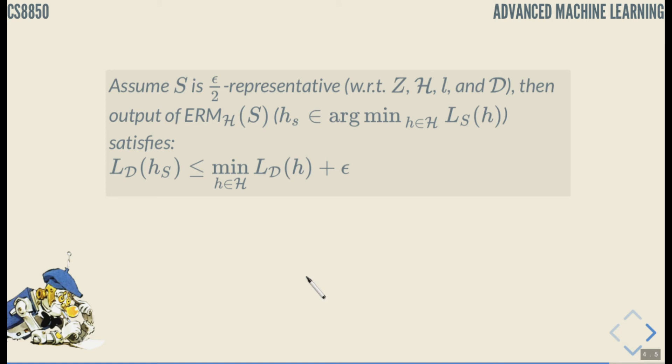So now assume that our training set S is epsilon over 2 representative with respect to the domain Z, finite hypothesis set H, generalized loss L and distribution D.